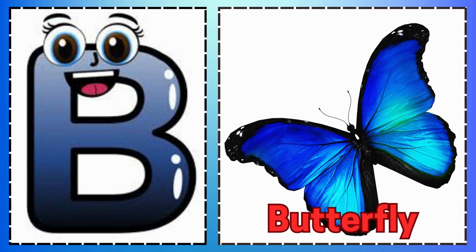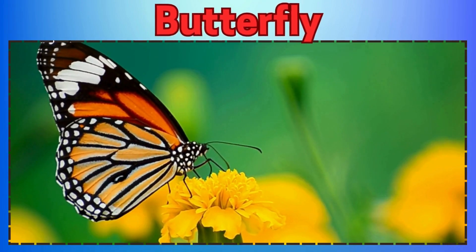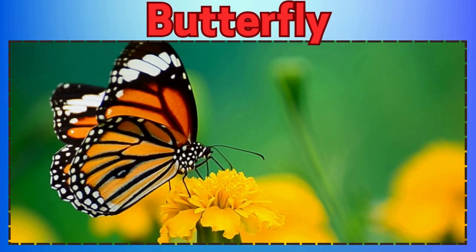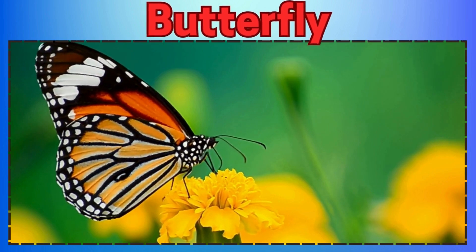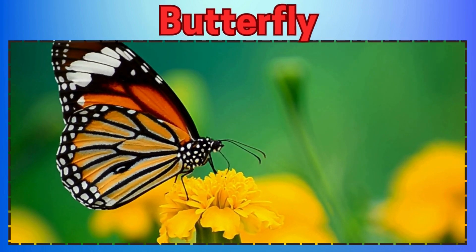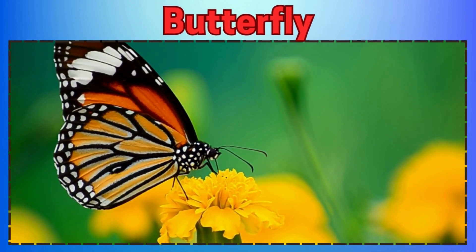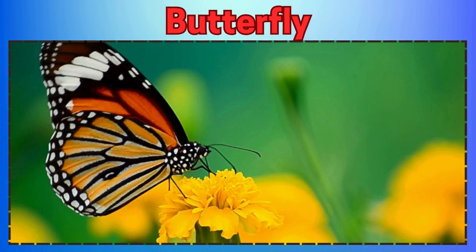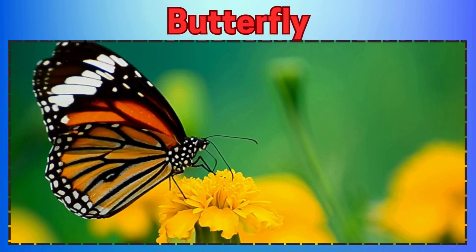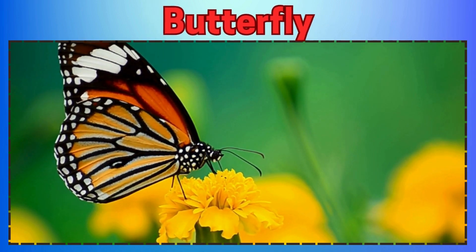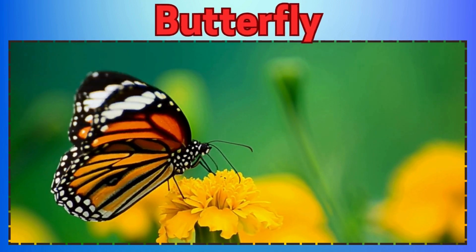I is for Inchworm Moving like a Wave. J is for Japanese Beetle Shining Brave. K is for Katydid Singing at Night. L is for Ladybug, A Red and Black Sight.